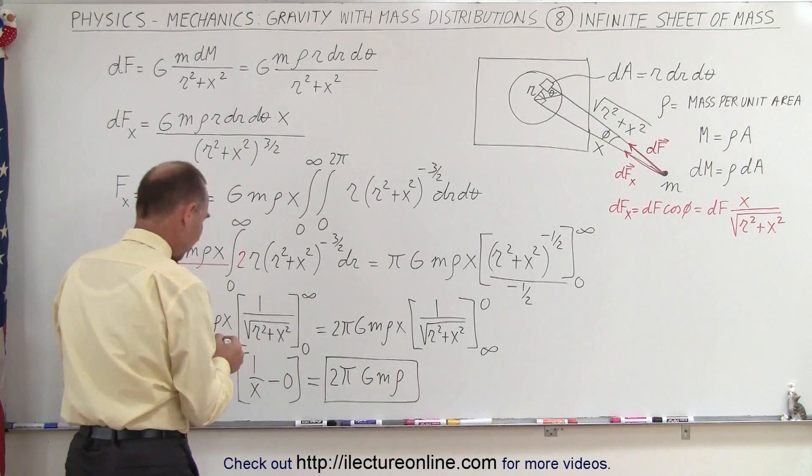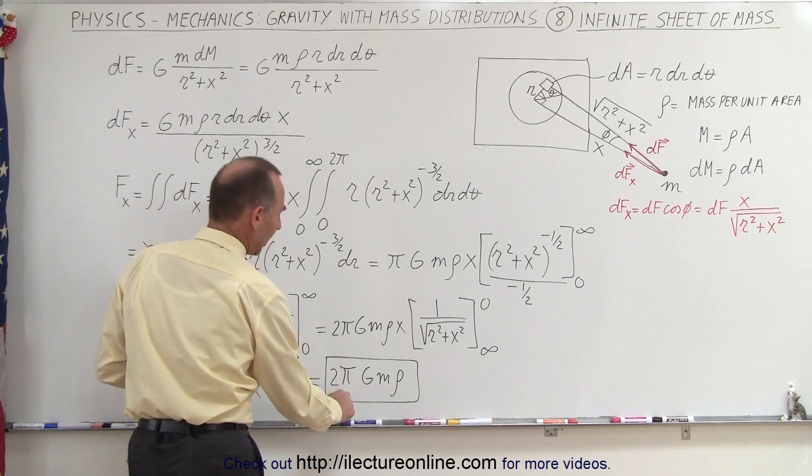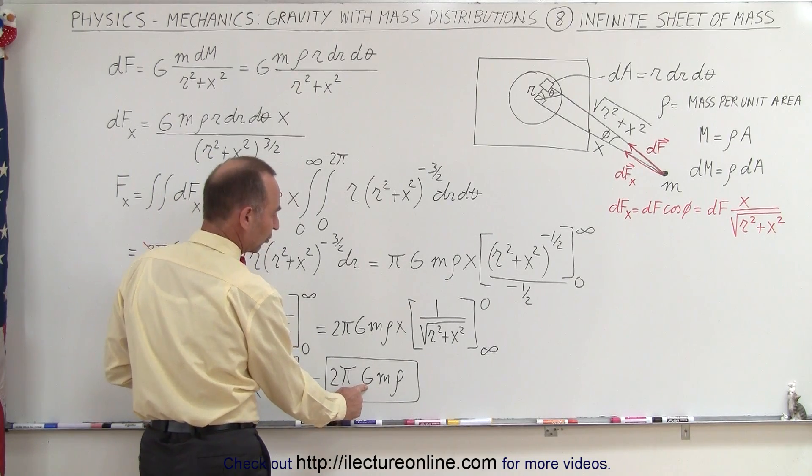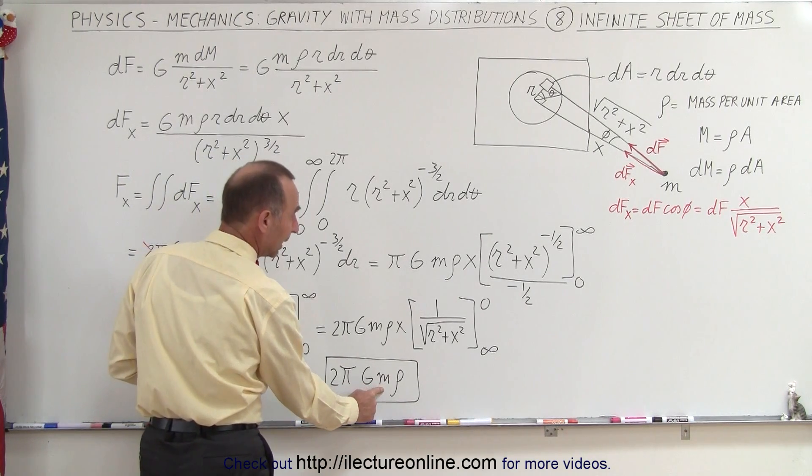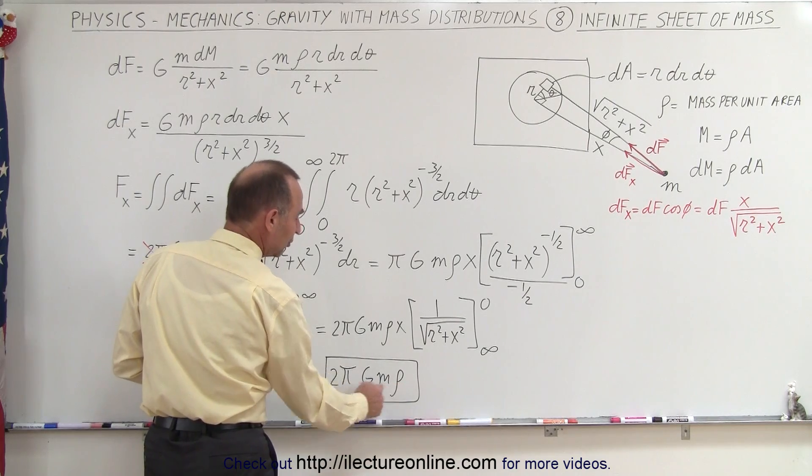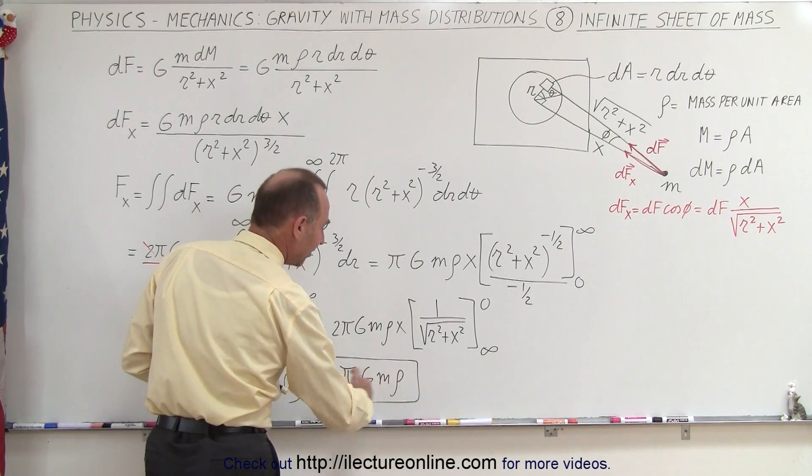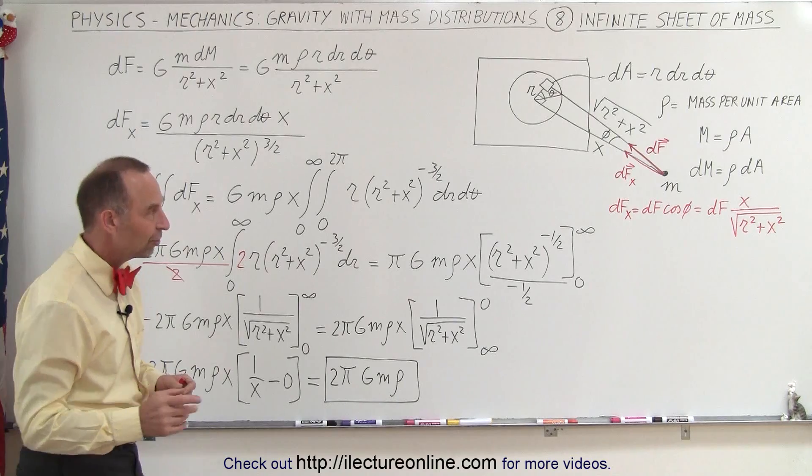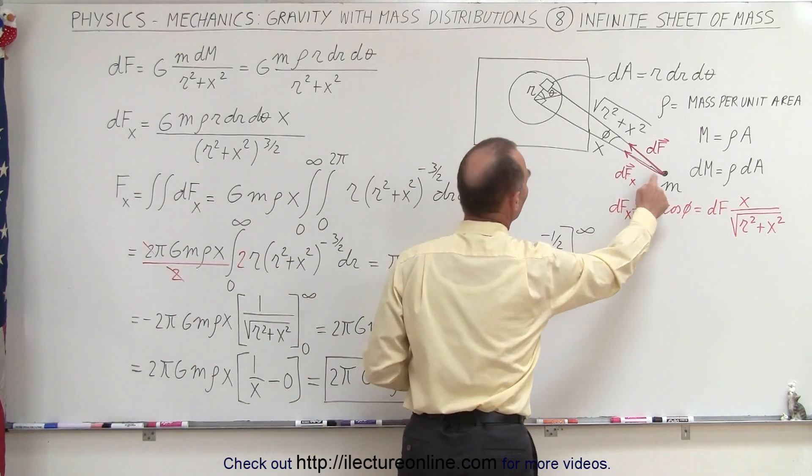So now let's take a look at this answer. So the answer is 2 pi times g, the universal gravity constant, m, and the density.